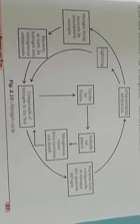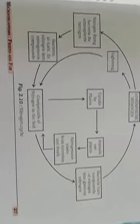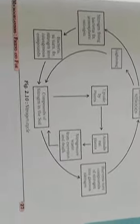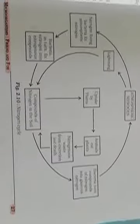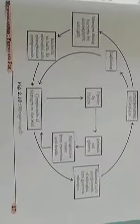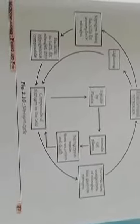Many organisms like plants use nitrogen as an essential constituent for their growth. Even after its use, the amount of nitrogen present in the environment remains at 78 percent. So how is this constant volume maintained? Let us study the nitrogen cycle.